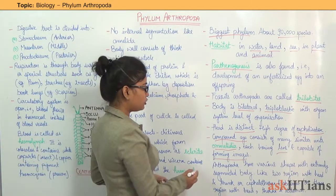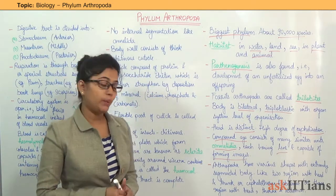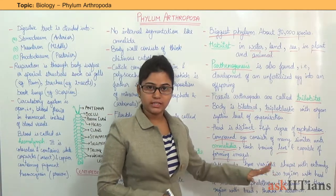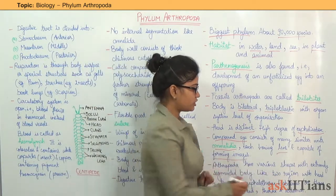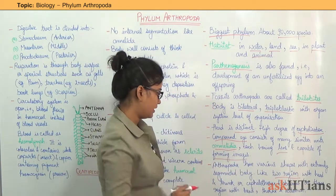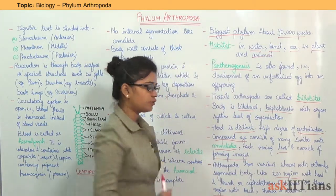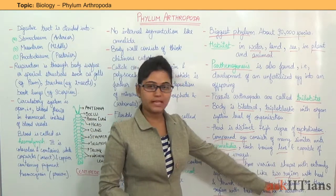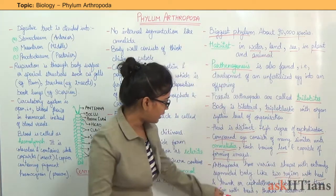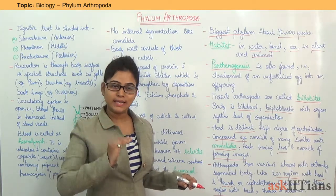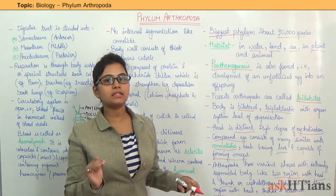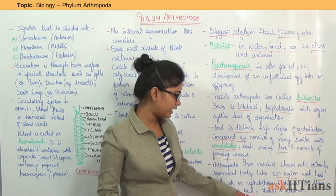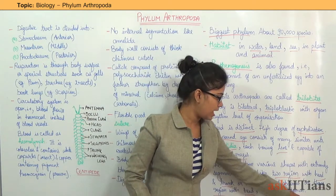Arthropoda has various shapes with an extremely segmented body. The body is divided into either two-region segmentation or three-region segmentation. Under two-region segmentation, the body is divided into head and trunk. Under three-region segmentation, the body is divided into head, thorax, and abdomen.